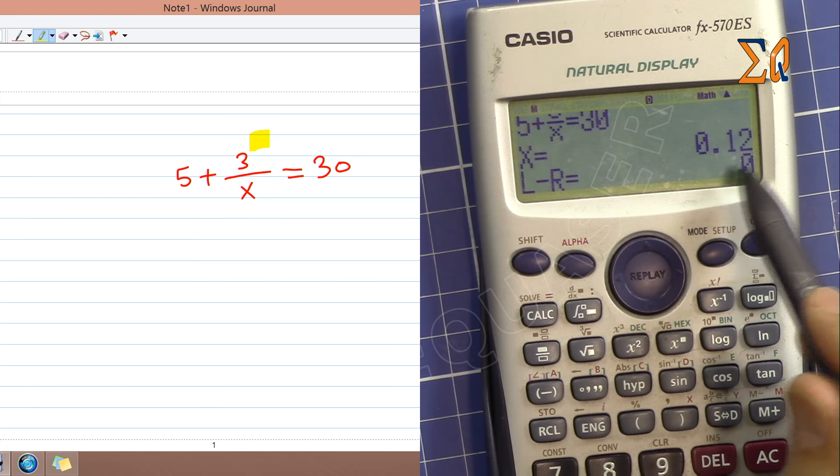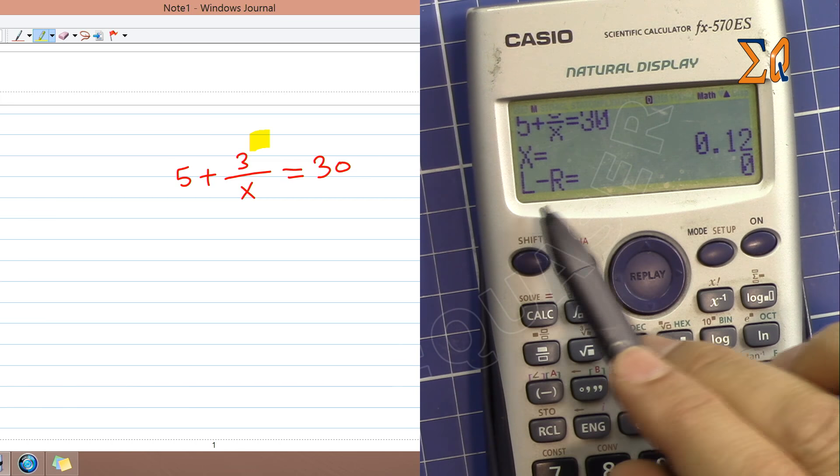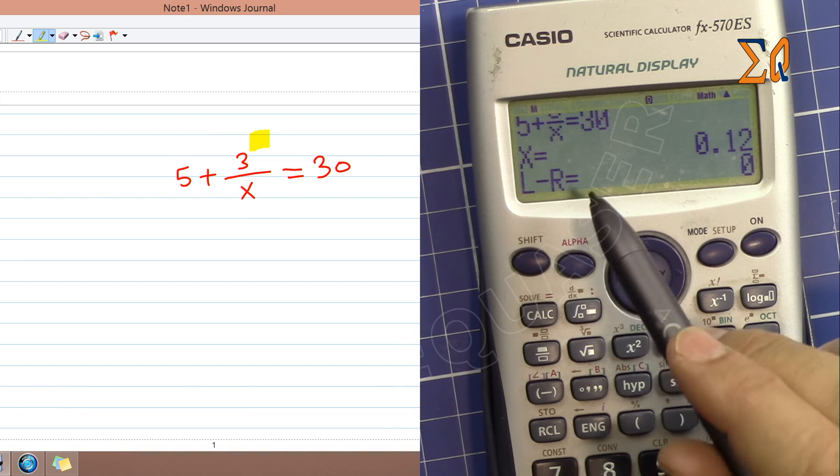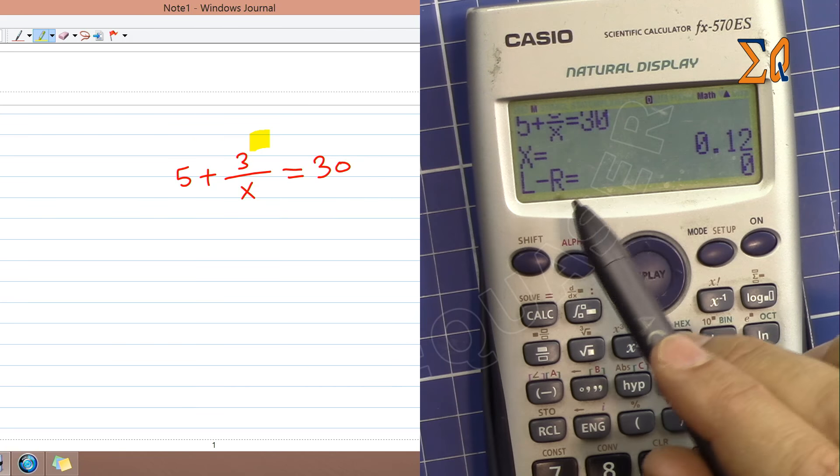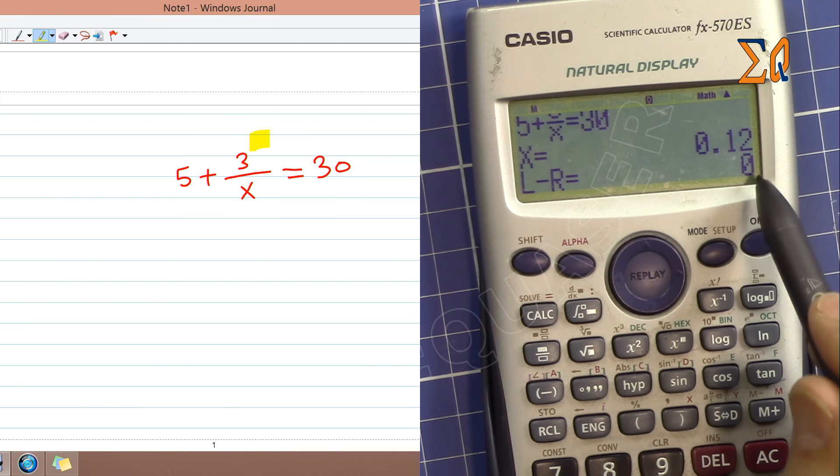And now the answer is 0.12. This left-right, this is the iteration error from the actual value. So 0 means it's absolute, there is no error.